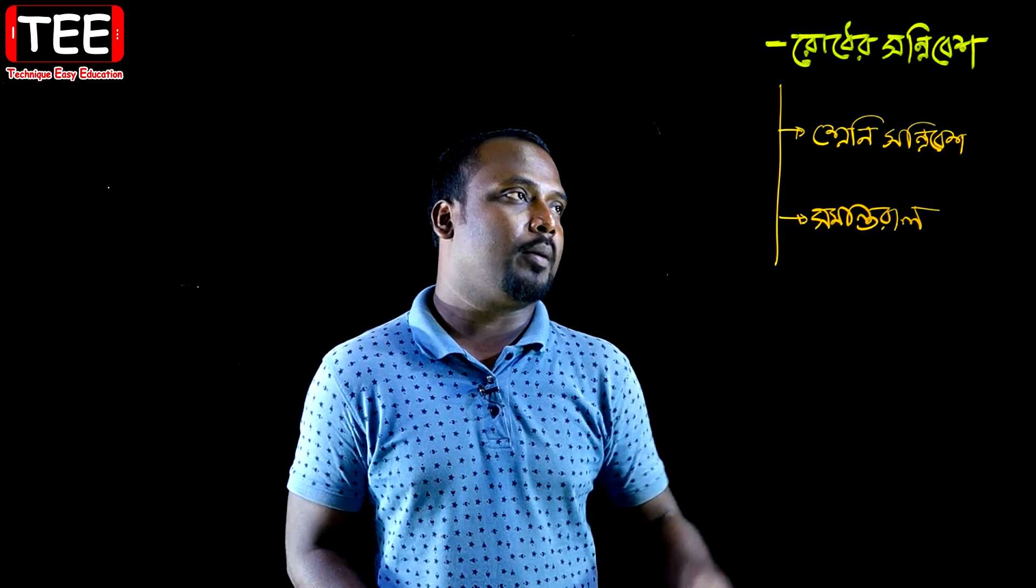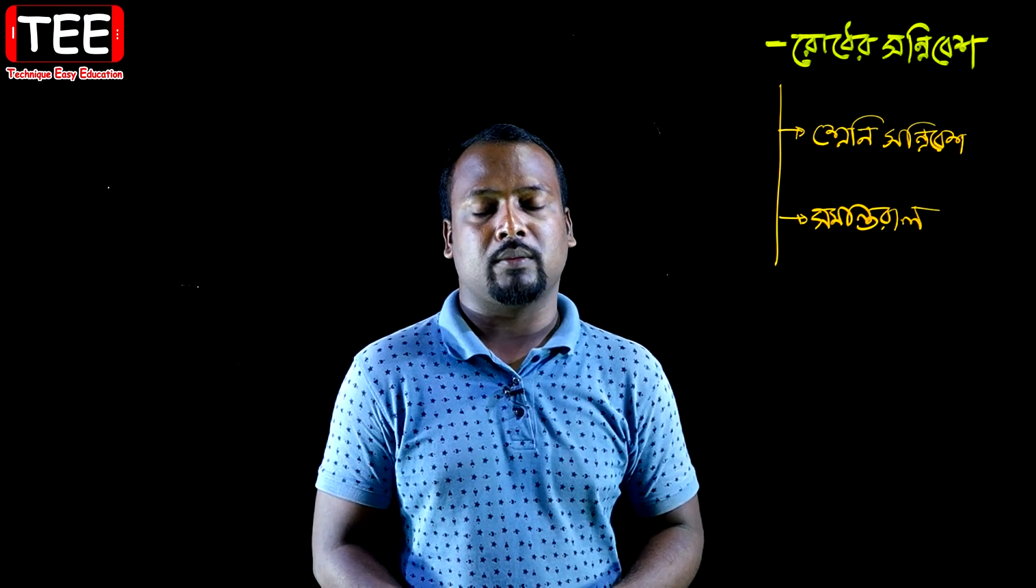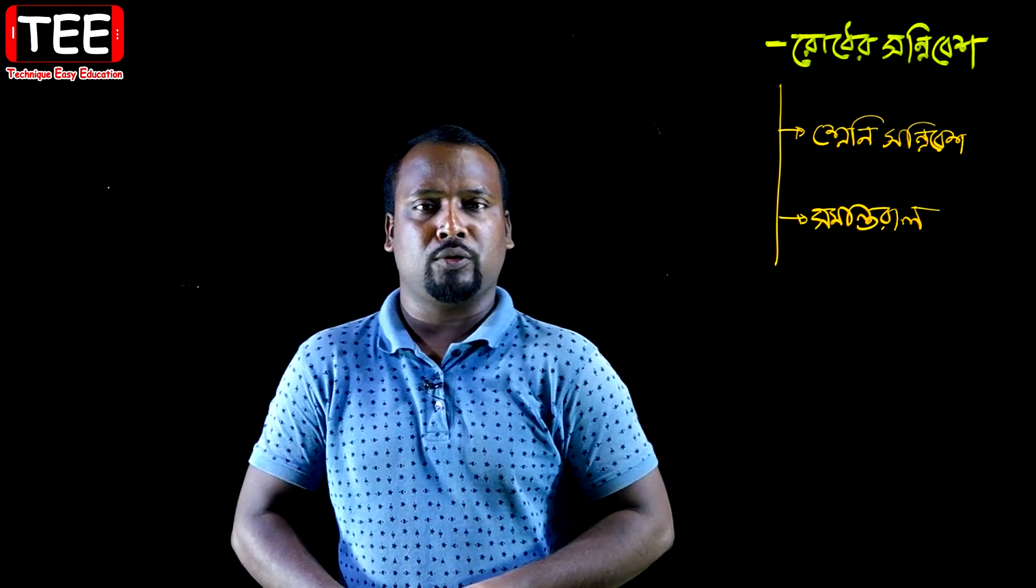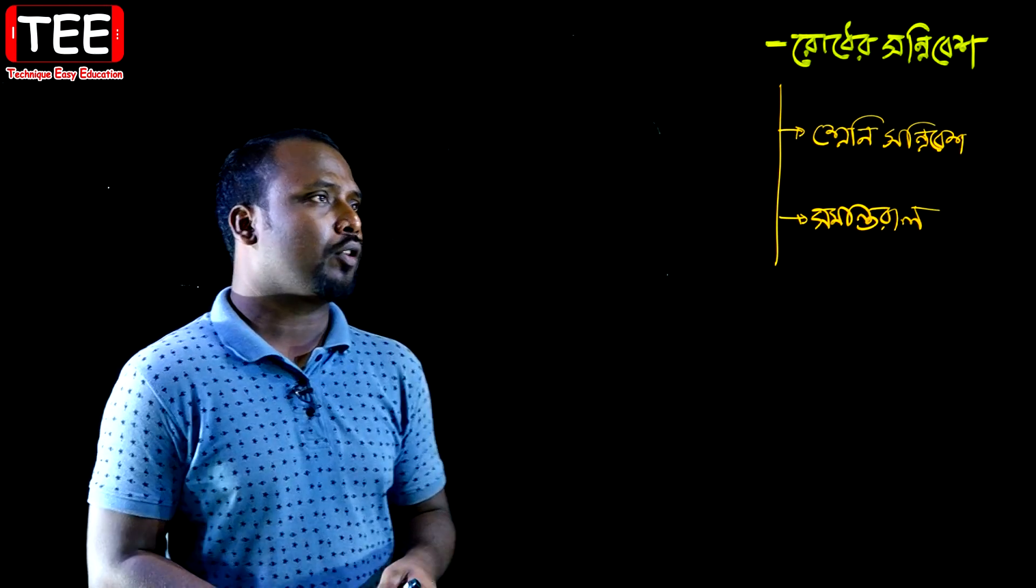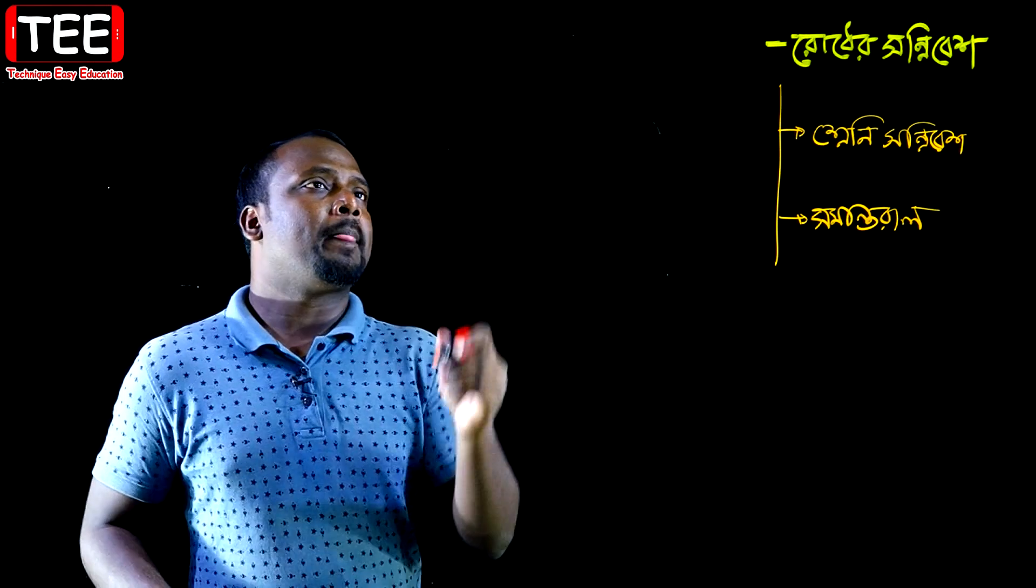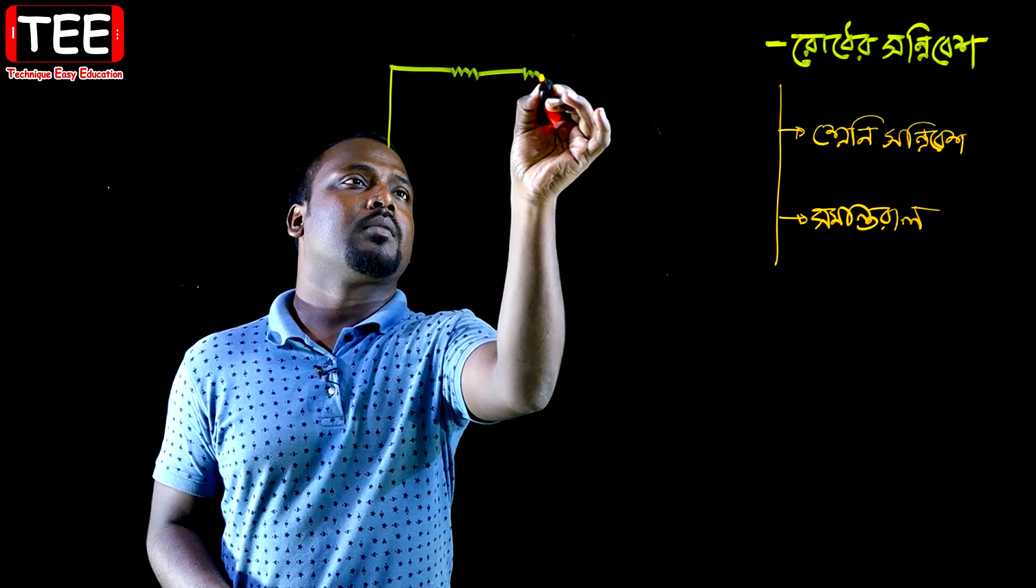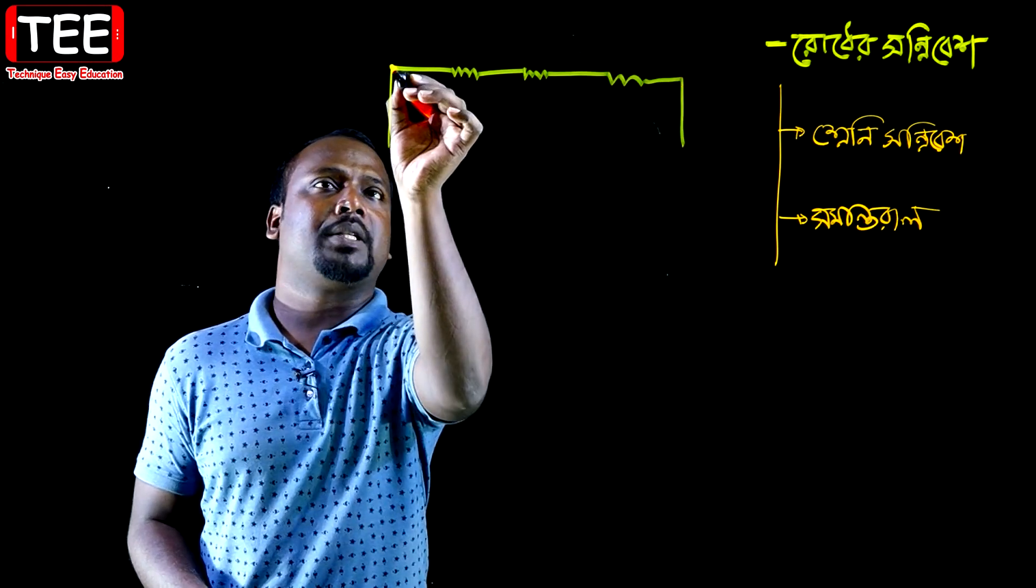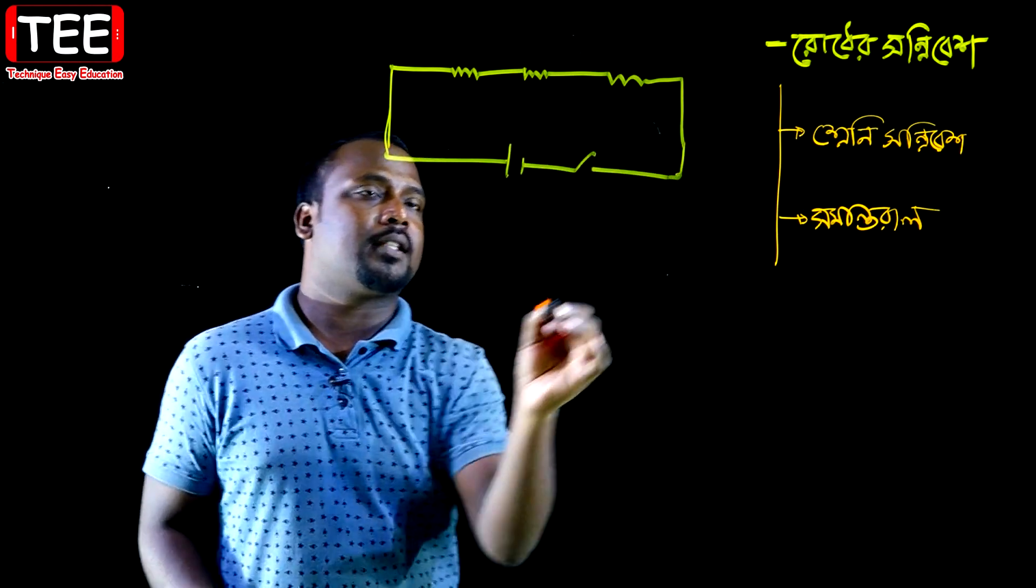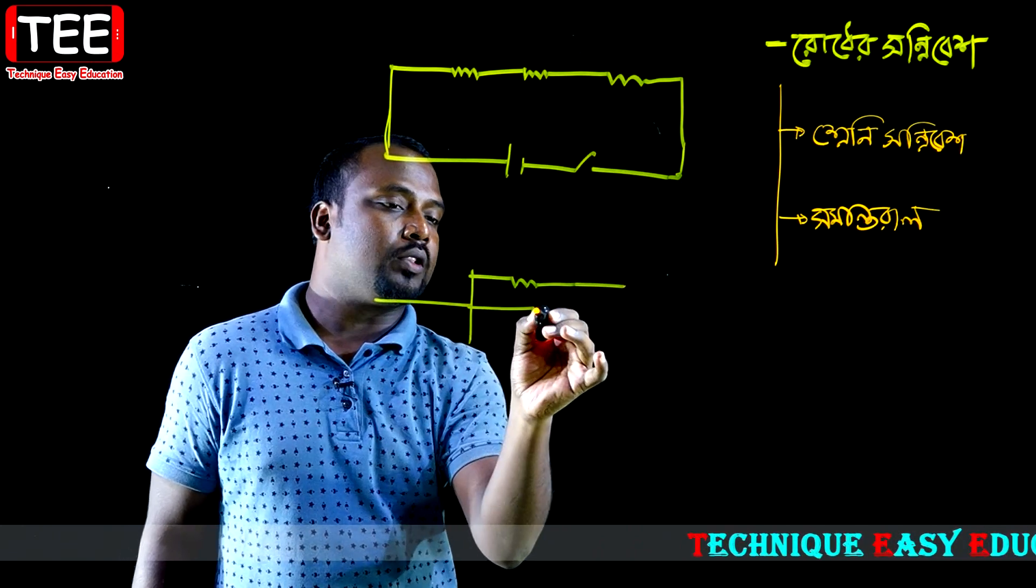This circuit shows parallel and series connections. This is the second stage. Now let's look at what the circuit diagram shows and examine the text.